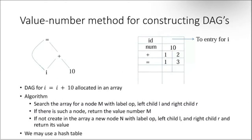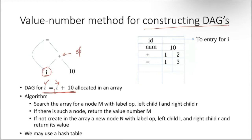Now, the value-number method for constructing DAGs. We have a simple expression: i equal to i plus 10, allocated into an array. How can this be represented as a DAG? We have two entries of i, but in a DAG there will be only one i. We have i plus 10, where the operator is plus, left operand is i, right operand is 10. This node is created, and the value coming out of this node needs to be assigned back to i.